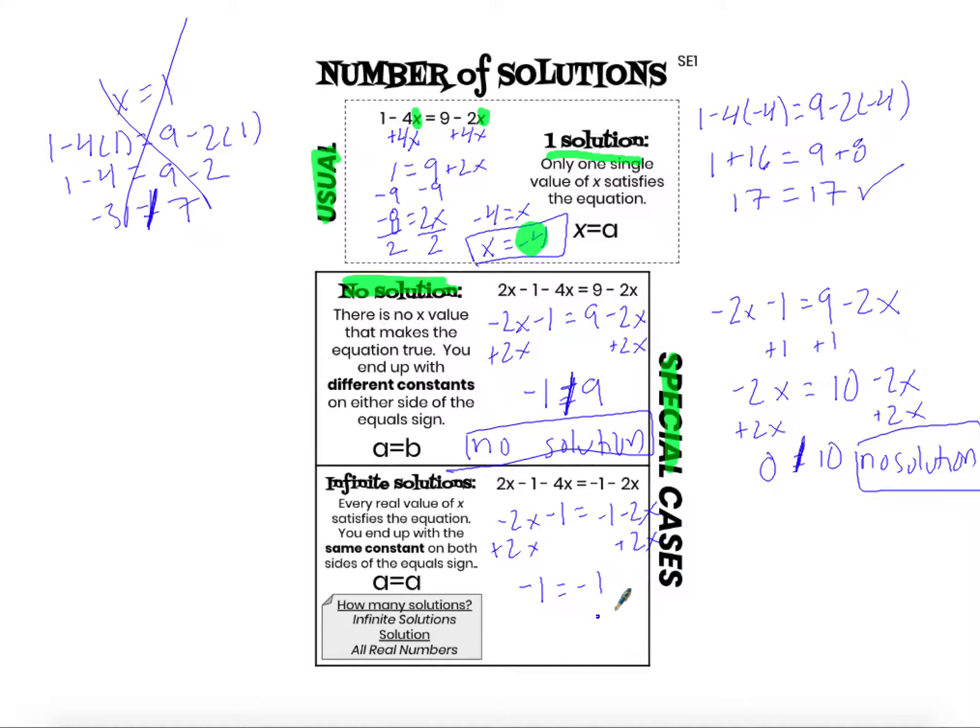So I'm not going to circle this. Again this is not my answer. This is my justification or my work. When I end up with this case I know that since negative 1 is always equal to negative 1, there are an infinite number of solutions to this equation, meaning anything I plug in for x ends up with a true statement because negative 1 equals negative 1 no matter what you plug in for x.